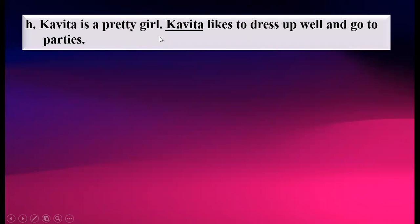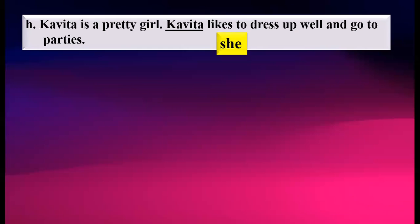Kavita is a pretty girl. Kavita likes to dress up well and go to parties. Here Kavita is underlined and is a name of a girl, so we have to use S-H-E, 'she', over here. Now look at the difference between these two pronouns: S-H-E 'she' and H-E-R 'her'. If the noun comes before the verb, we use 'she' or 'he'. And if the noun comes after the verb, we use 'her'. But it is exceptional.